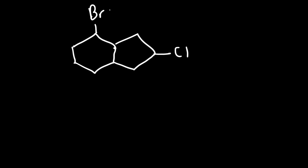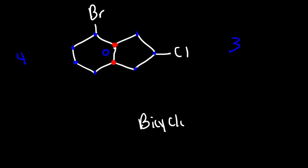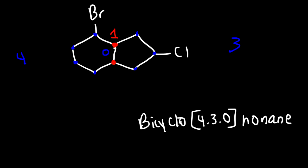Now let's try one more example, but this time with substituents. Feel free to pause the video and try this problem. So let's identify the bridgehead carbon atoms first. On the left side there are four carbon atoms. In the middle there's zero, and on the right side we can see that there's three. So far we have the name bicyclo[4.3.0]. Four plus three is seven, plus the two bridgehead carbon atoms, that's nine — nonane. Now, how should we number this system? Should we make this bridgehead carbon carbon one, or the one below it as carbon one? And which direction should we begin counting — towards the right or towards the left?